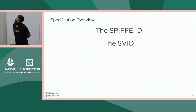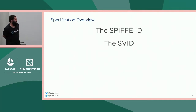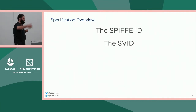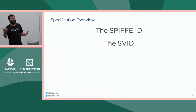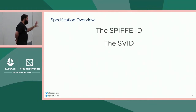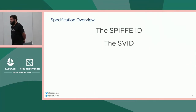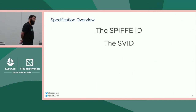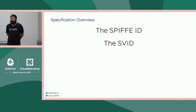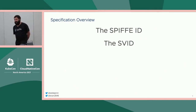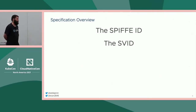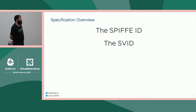Then there's the SVID — the SPIFFE Verifiable Identity Document. This is the way that you prove identity to someone else. It's usually a signed document of some sort with a SPIFFE ID in it, maybe with a public key that the workload holds. We try not to reinvent anything here — inventing new documents is difficult and requires net-new investment from users. So we choose documents already widely adopted and well understood. The two supported SVID types right now are X.509 and JWT. X.509 is generally useful for TLS, and JWT is generally useful for securing the message layer or layer 7.